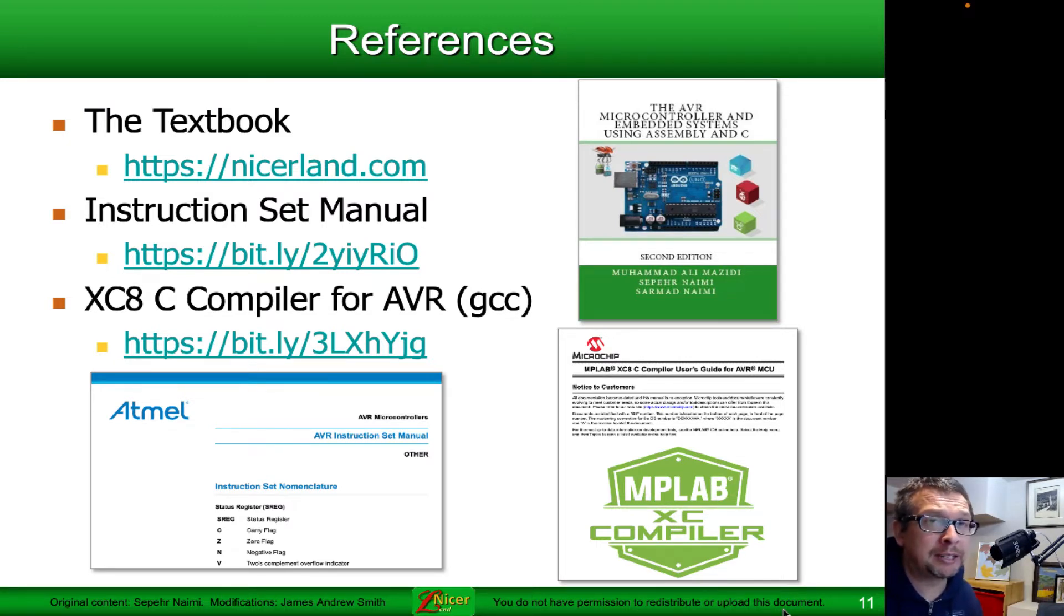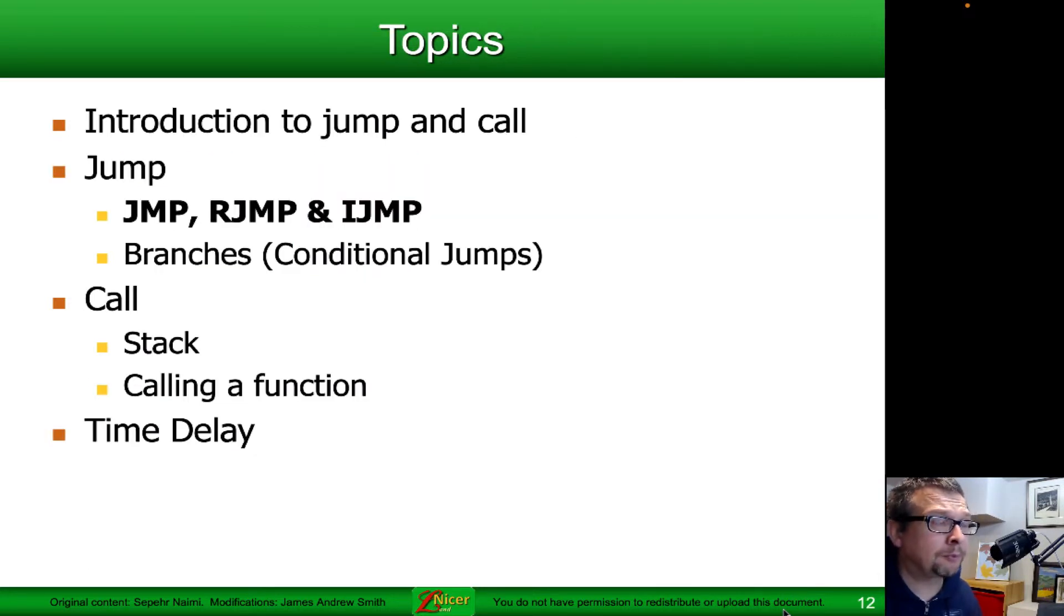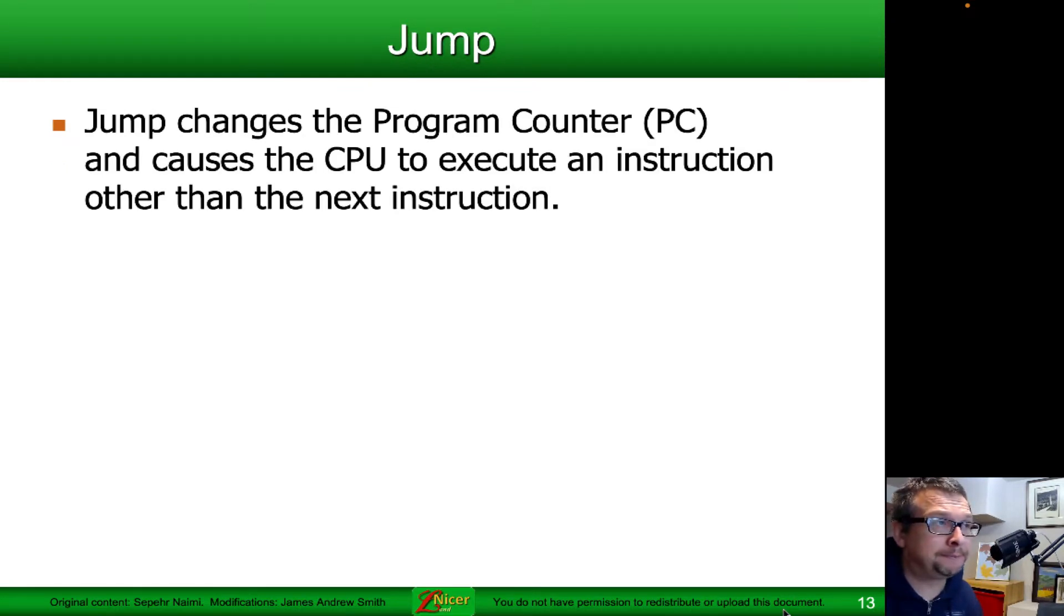All right, so we're going to be talking about JMP, RJMP, and IJMP—the jump, relative jump, and indirect jump for the AVR microcontroller. A jump changes the program counter, so the program counter is the thing that keeps track of where you are in your program and causes the CPU to execute an instruction other than the next instruction. Typically you're going from the first to the second to the third instruction, but sometimes you want to go from the first instruction, second instruction, and now jump to the 20th instruction. You use jumps to do that.